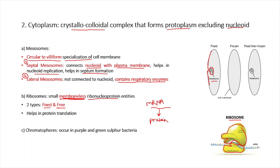The next cytoplasmic component is chromatophores. These are compounds within a bacterial cell that contain certain pigments. They occur mostly in purple sulphur bacteria and green sulphur bacteria.